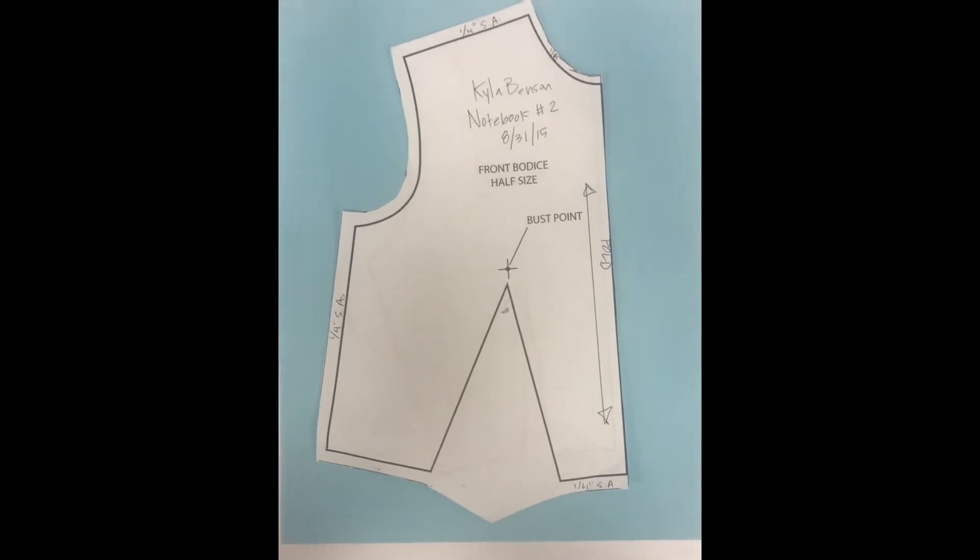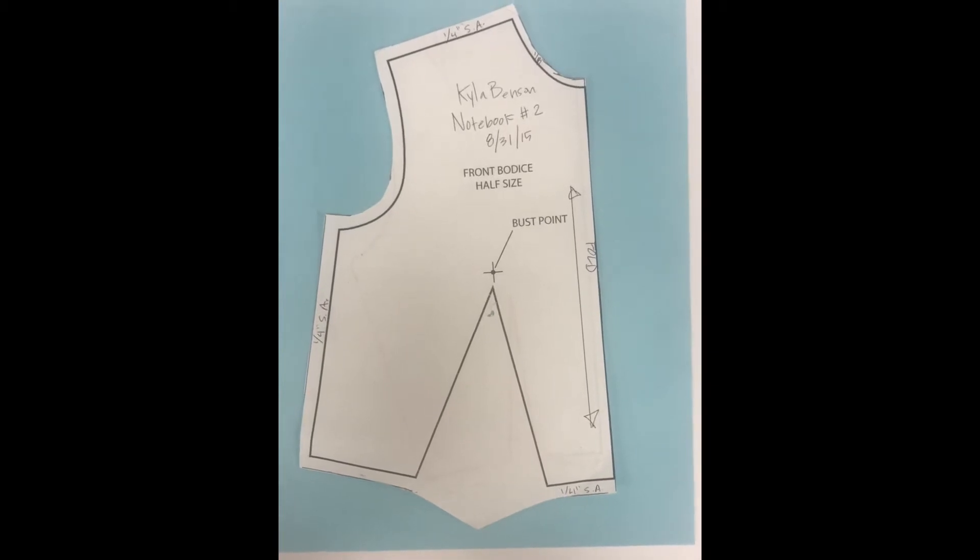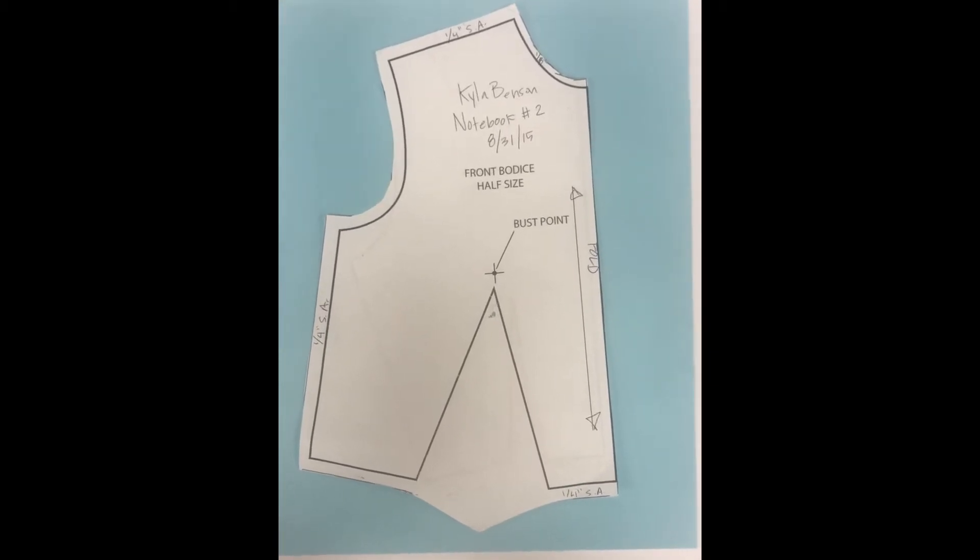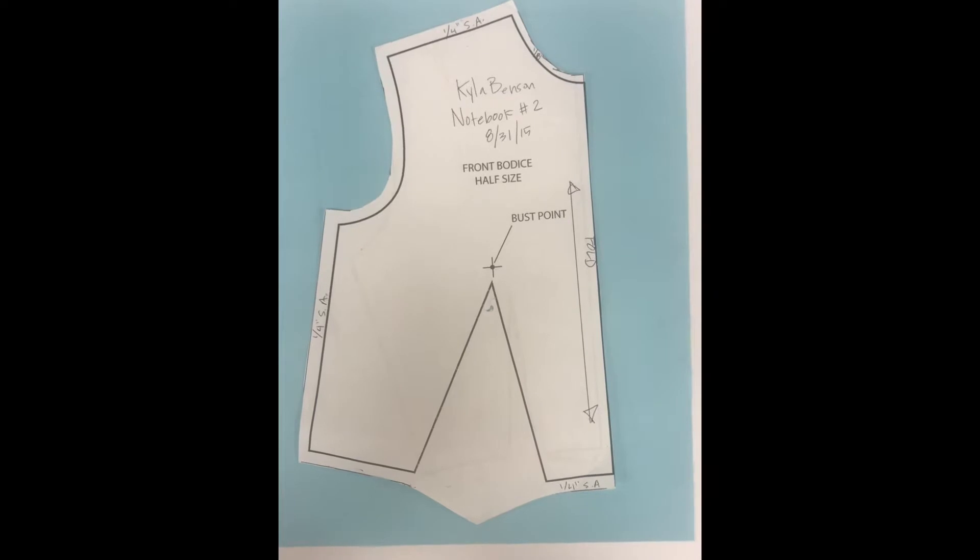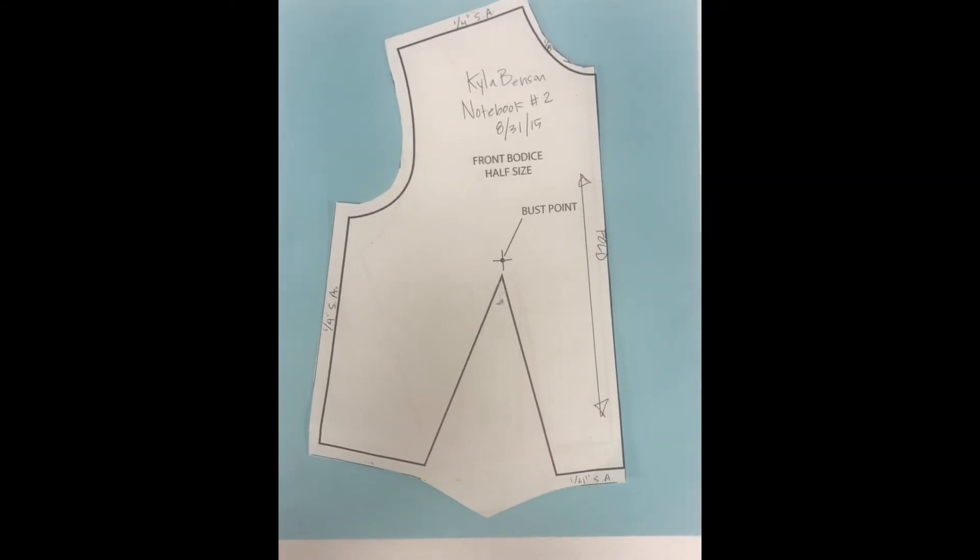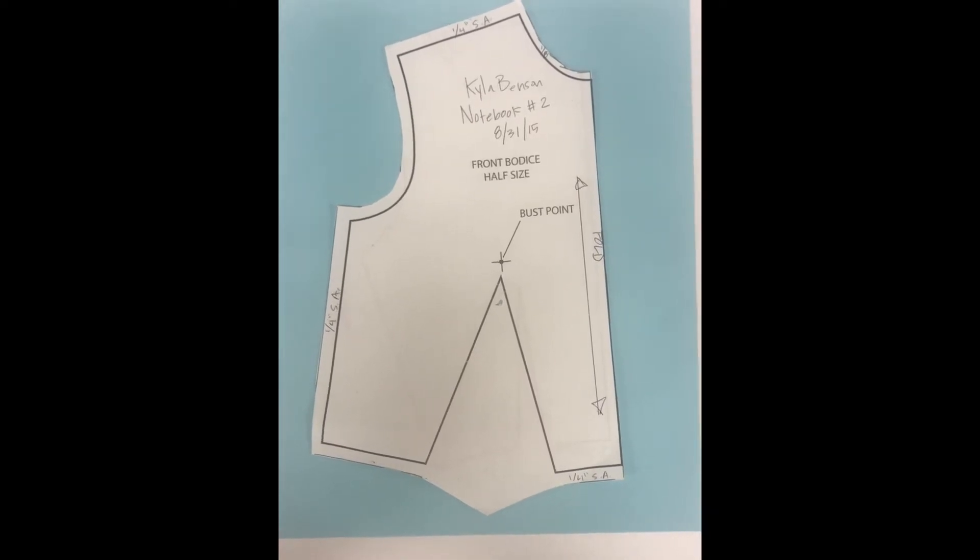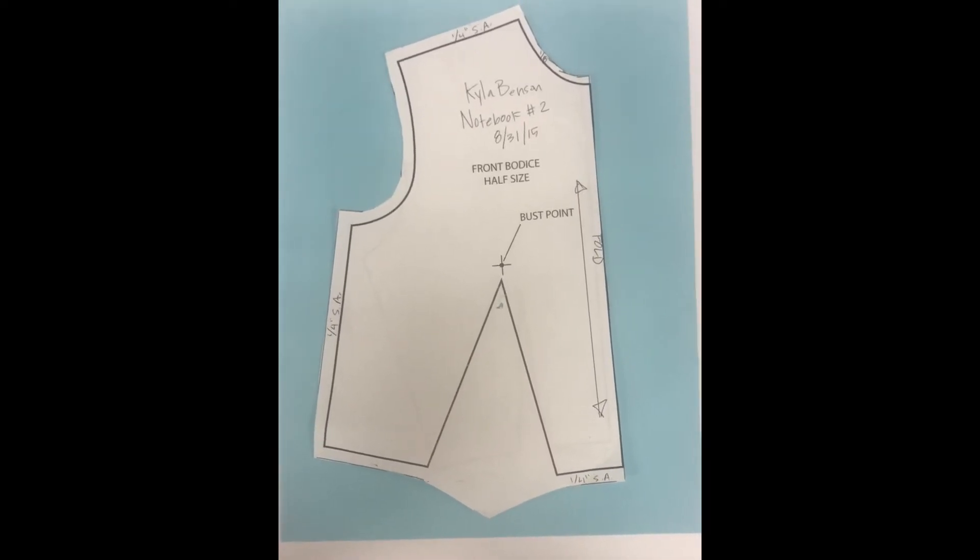Here is a question. When you see this pattern shape, this is a front bodice, it's cut on the center front fold and there's one dart in it. Can you visualize what your fabric would look like when you sew it up? Take a minute, try to visualize it, maybe even sketch it.